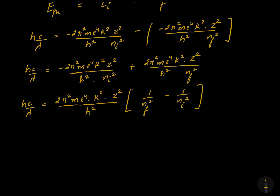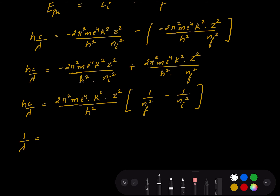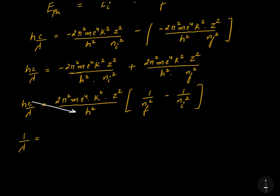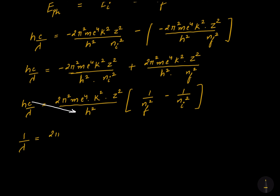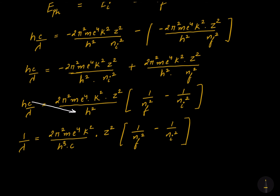Cross-multiplying, 1/λ = 2π²me⁴k²/(h³c) × Z² × (1/nF² − 1/nI²), where nF is the final orbit number and nI is the initial orbit number.